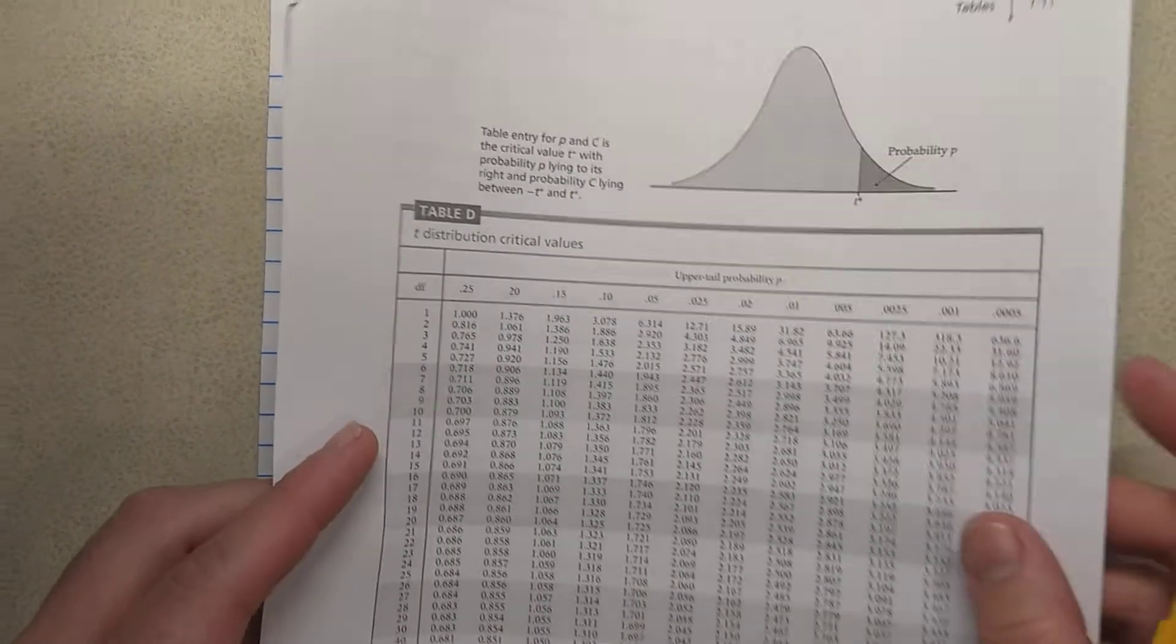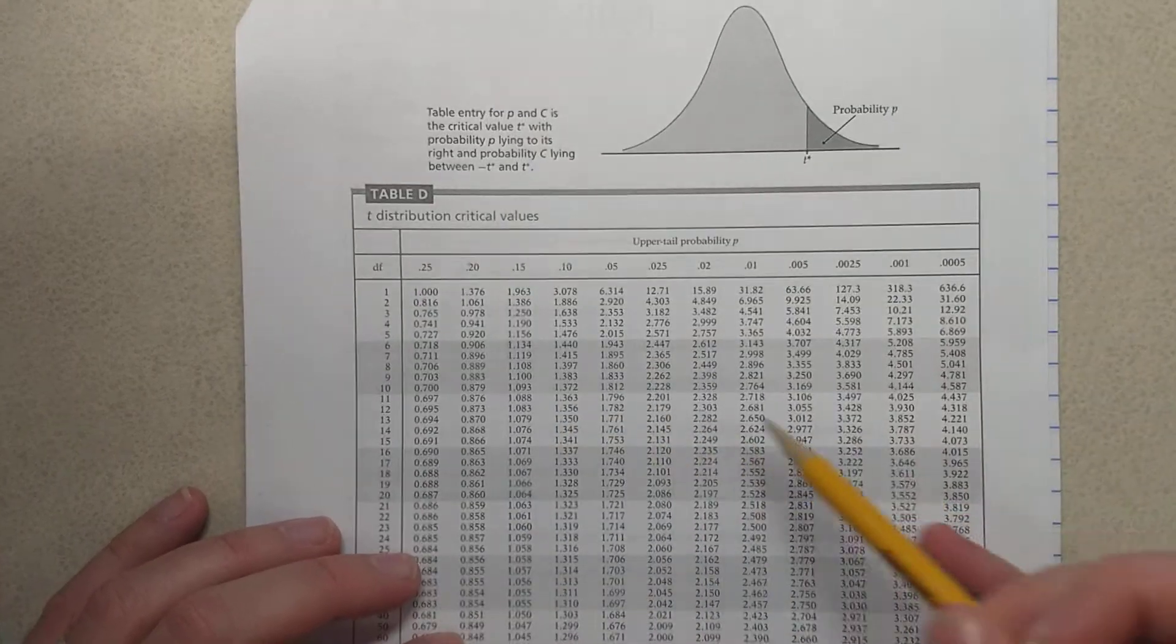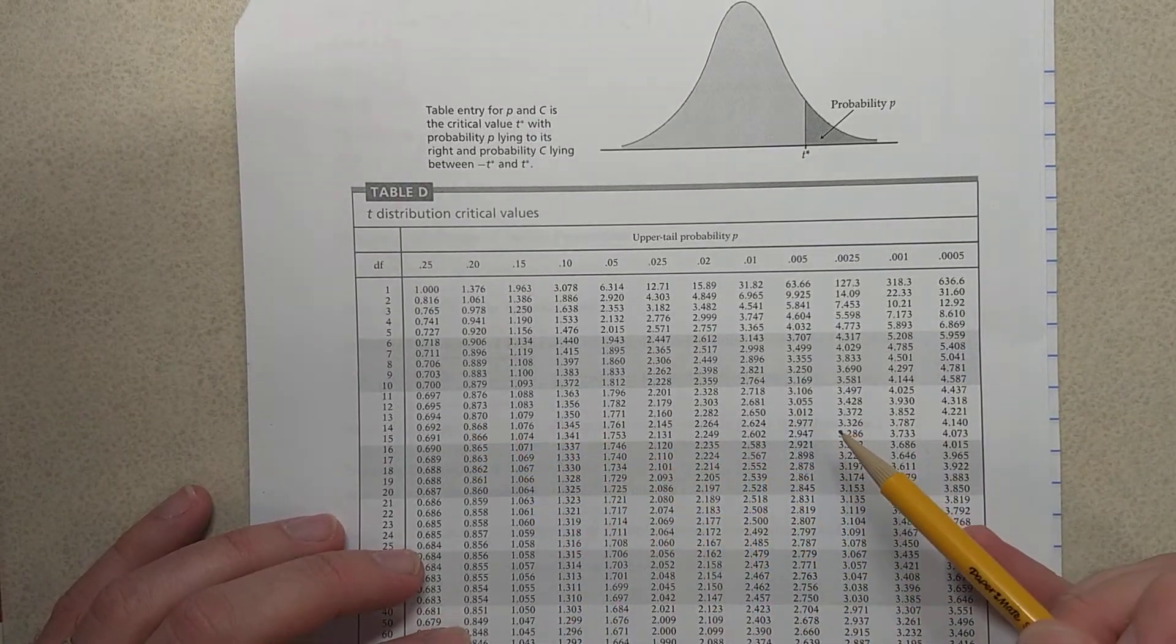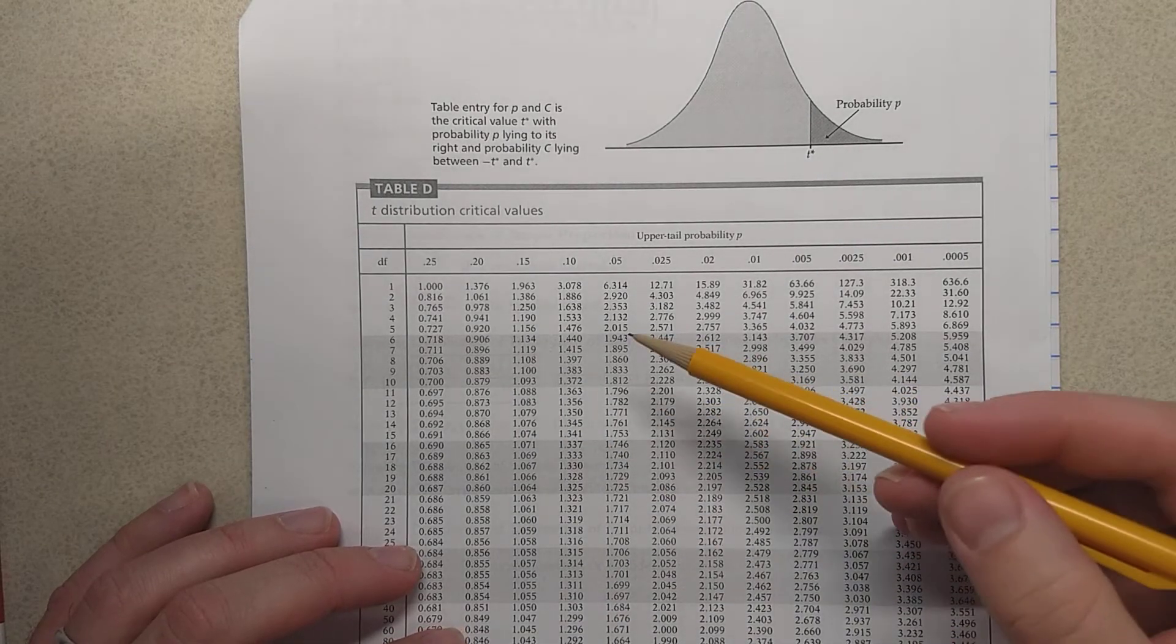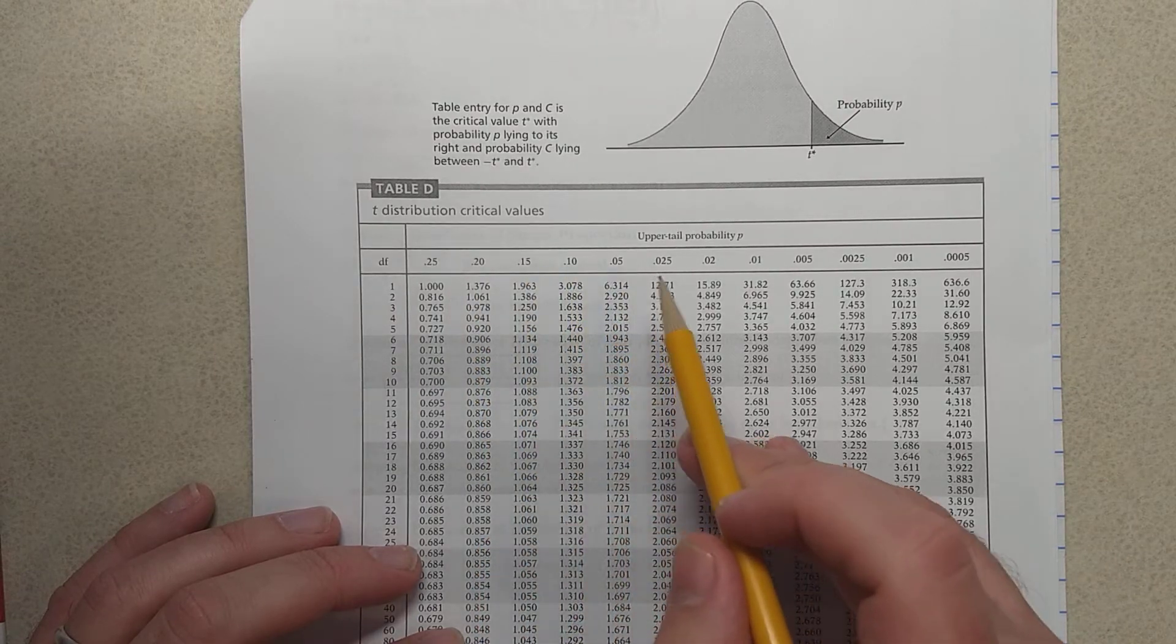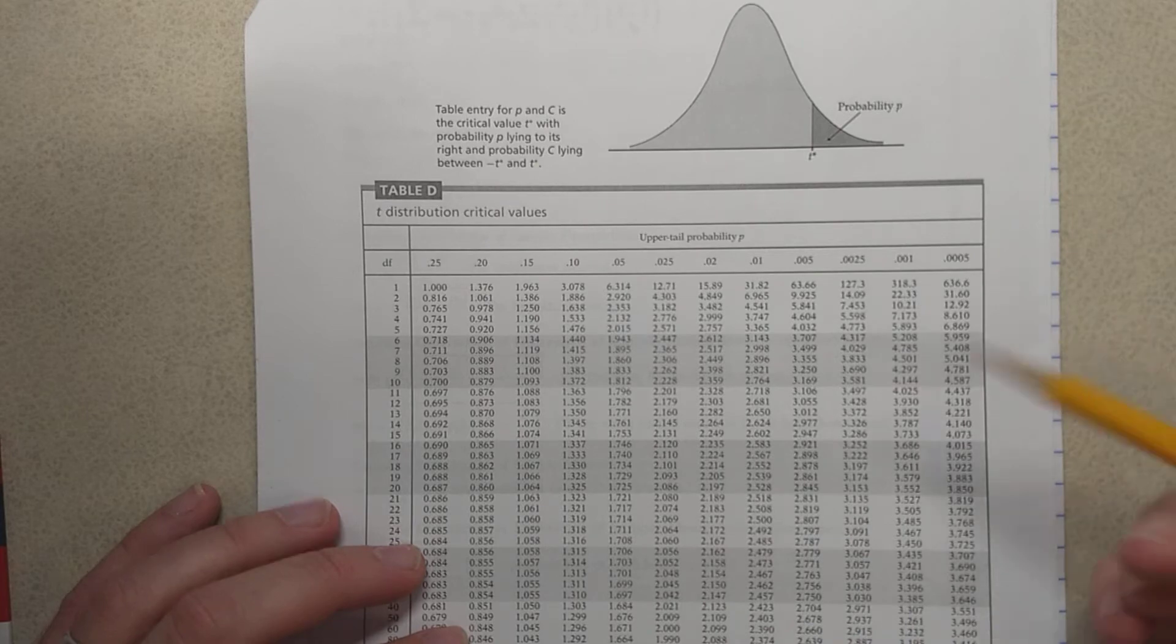The problem with the t-distribution and the t-table is that you have the different degrees of freedom. So you would really need like a different z-type table for every degree of freedom to have a complete t-table. And so the table is abbreviated only for certain probabilities.